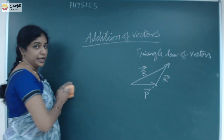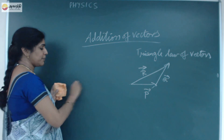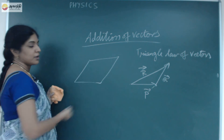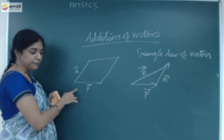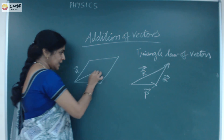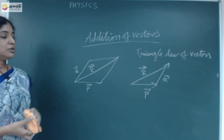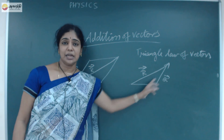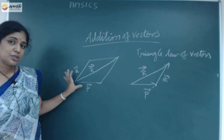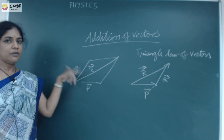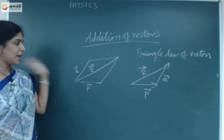If there are any 2 vectors and they represent the two sides of a parallelogram, then the diagonal passing through the common point gives you the resultant of those 2 vectors. So in the Parallelogram Law of vectors, the two sides represent the two vectors, and the diagonal gives you the resultant.